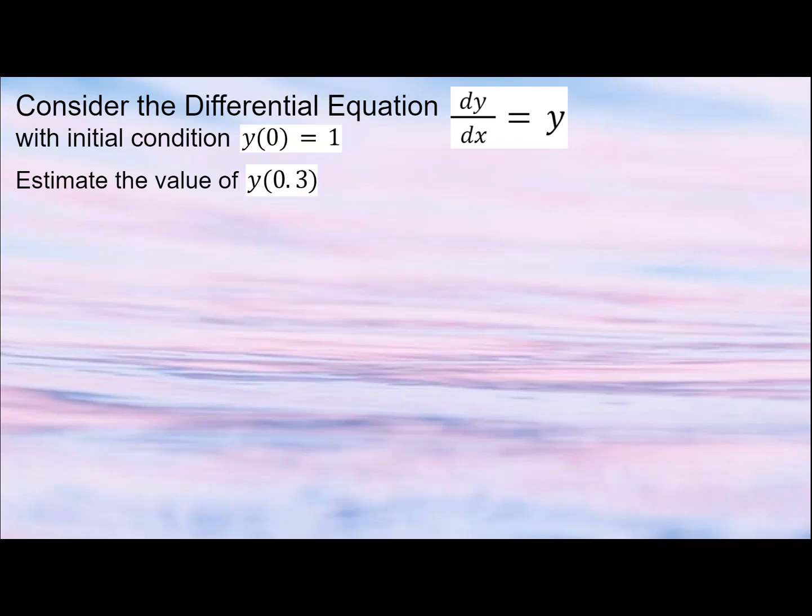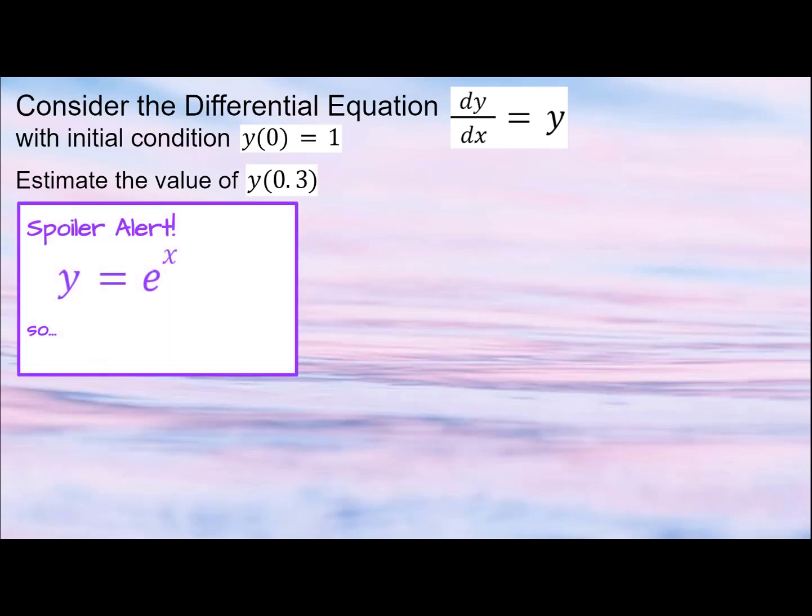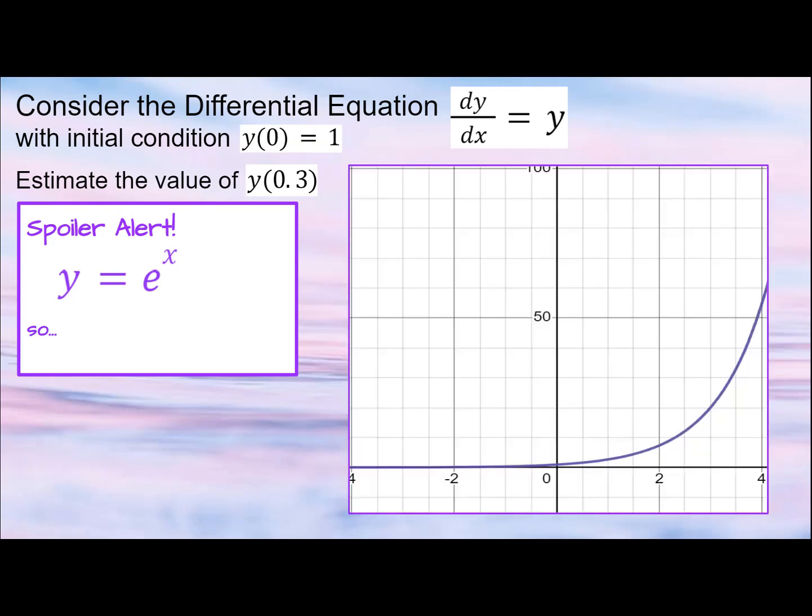This differential equation is solvable. So spoiler alert, y = e^x. That graph looks like this. Meaning, we actually know the real value of y(0.3). That would be 1.34985. If this were unsolvable, we would not be able to find the exact value of y(0.3).